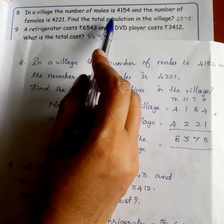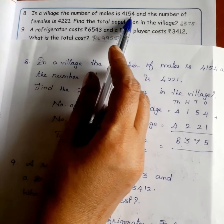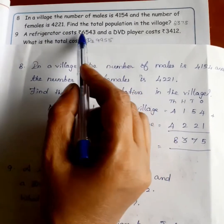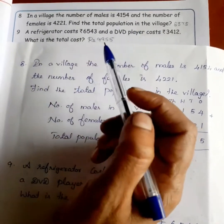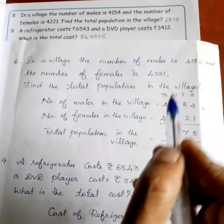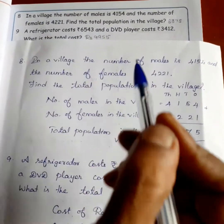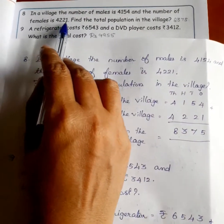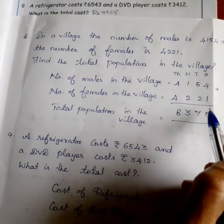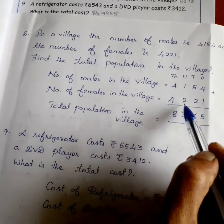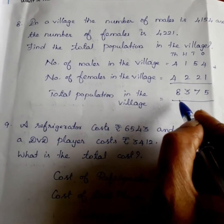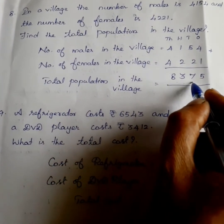In a village, the number of males is 4,154 and the number of females is 421. Find the total population. The number of males is 4,154. So, 4 plus 1 is equal to 5. 5 plus 2 is equal to 7. 1 plus 2 is equal to 3. 4 plus 4 is equal to 8. So, answer: 8,375.